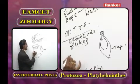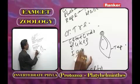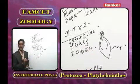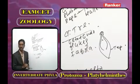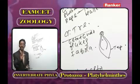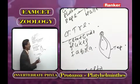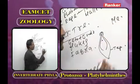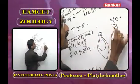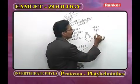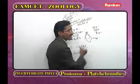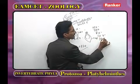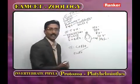The best example is Fasciola hepatica. In the life history of Fasciola hepatica, larval forms are: miracidium, sporocyst, redia, cercaria, and metacercaria.